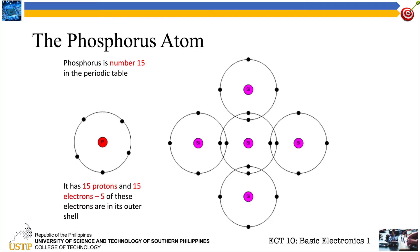We have here our plain silicon material with four valence electrons. Let's see if we replace this silicon atom with phosphorus. As we can observe, it also has these shared electrons, but take note — since phosphorus has five valence electrons, there is one free remaining electron that is very available for conduction.